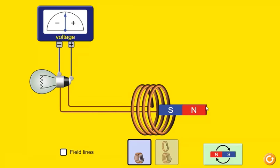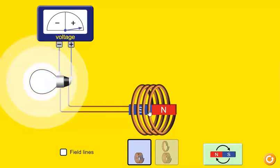Methods to change magnetic field: by moving a magnet towards or away from the coil, by moving the coil into or out of the magnetic field, by changing the area of a coil placed in the magnetic field, by rotating the coil relative to the magnet.